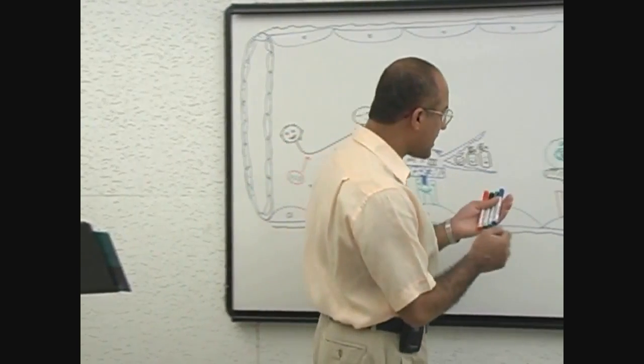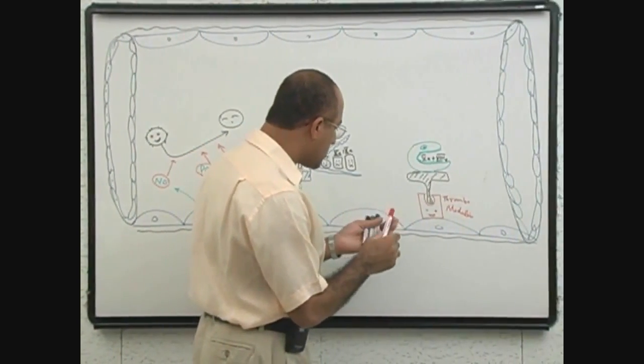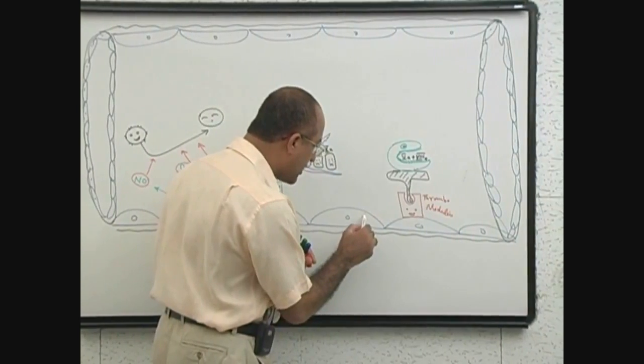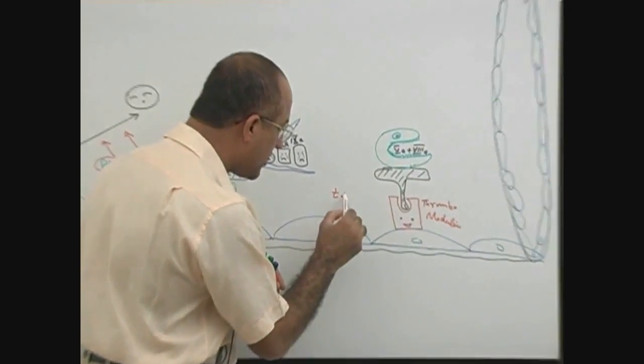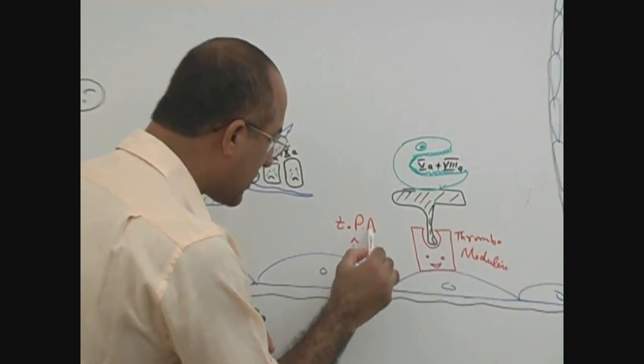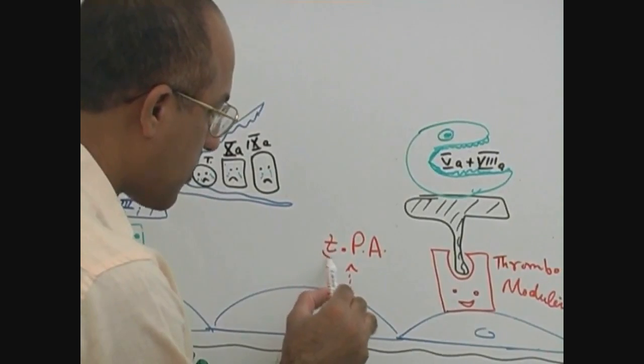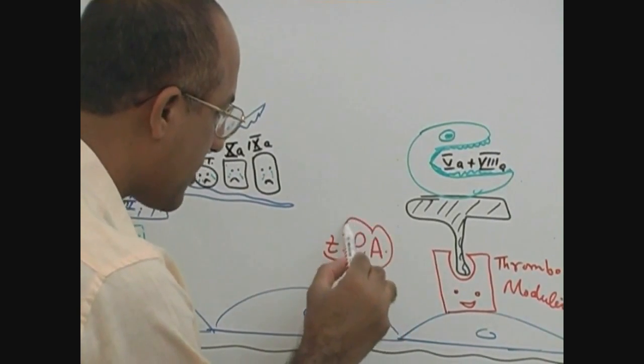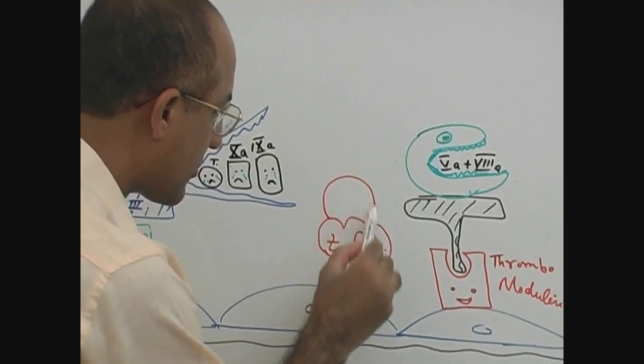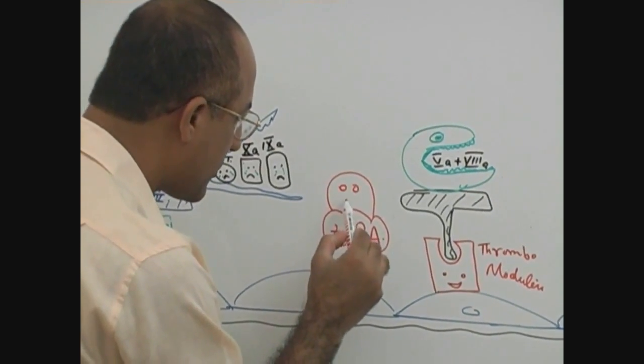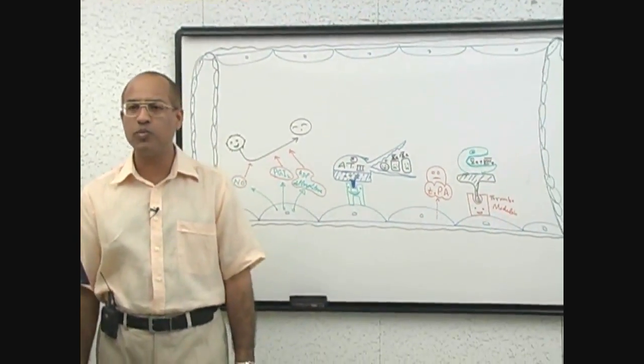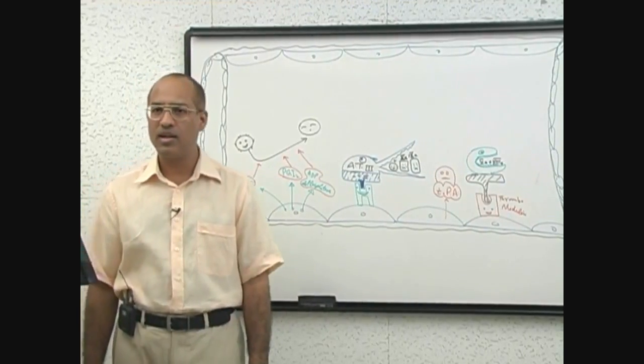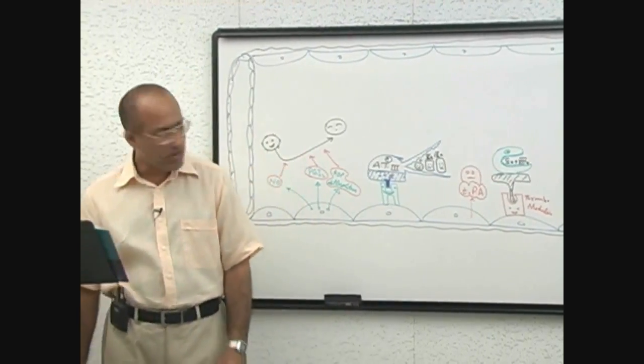How can fibrin be prevented? Healthy endothelium produces a substance called tissue plasminogen activator. This is a product which is produced by healthy endothelium.